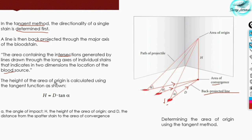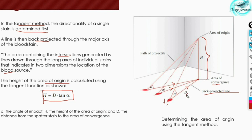Once the area of convergence is found, we calculate the height of the area of origin using the formula: d × tan(alpha). We first calculate the angle of impact for all stains, back-project the lines to find the area of convergence, and then calculate the height of the area of origin using d × tan(alpha), where d is the distance from the spatter stain to the area of convergence.